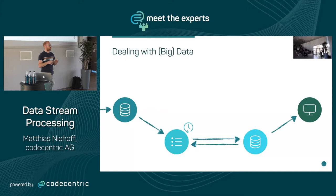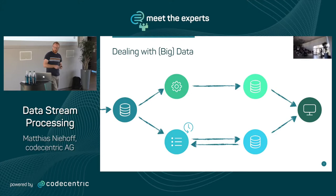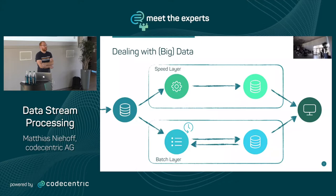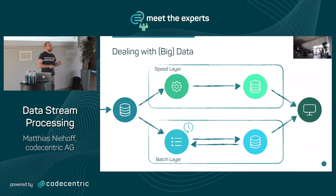Then there might be some visualization of the data, or a so-called speed layer where we just get the data, aggregate it, store it somewhere, and get near real-time results. This is known as the batch layer and speed layer, and this architecture is called the lambda architecture — a term used in a pretty wide context maybe five or ten years ago.